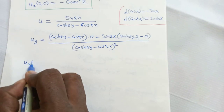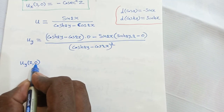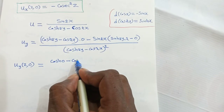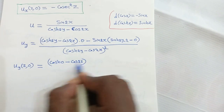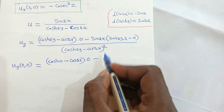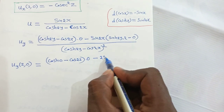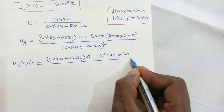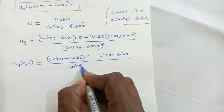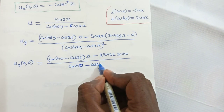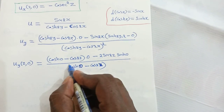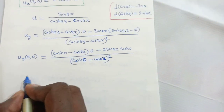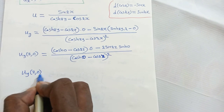Computing uy(z, 0) by putting x = z and y = 0: sinh(0) = 0, so the numerator is -cos(2z) · sinh(0) = 0. Since sinh(0) = 0, the entire expression equals 0. Therefore, uy(z, 0) = 0.